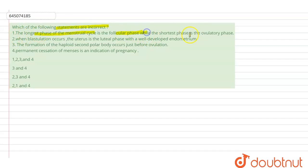The first statement is that the longest phase of the menstrual cycle is the follicular phase while the shortest phase is the ovulatory phase. So if we talk about the phases of the menstrual cycle, day one to day five is the day of menstruation, followed by which day six to thirteen is the follicular phase or proliferative phase where the follicle develops at a very fast rate and the proliferation of endometrium takes place.